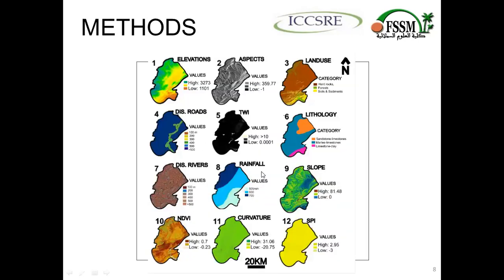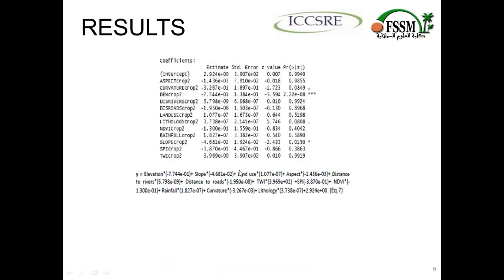These are the flood conditional factors. The ancient floods in the Tudra River were mapped using Landsat 8 imagery and historical events. From this database, 12 factors were mapped, including elevation, aspect, distance to rivers, lithology, and others. These were verified using the Receiver Operating Characteristic curve — the ROC AUC (Area Under the Curve).